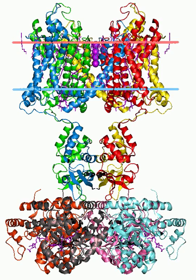Alpha subunits form the actual conductance pore. Based on sequence homology of the hydrophobic transmembrane cores, the alpha subunits of voltage-gated potassium channels are grouped into 12 classes, labeled KVα1–12. The 40 known human voltage-gated potassium channel alpha subunits are grouped first according to function and then subgrouped according to the KV sequence homology classification scheme.